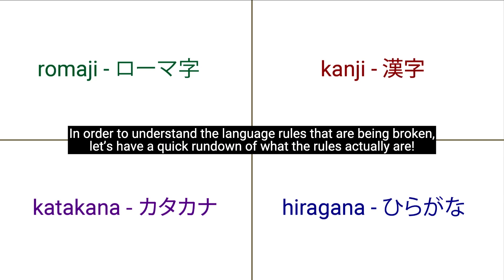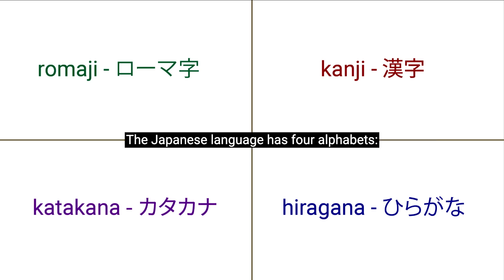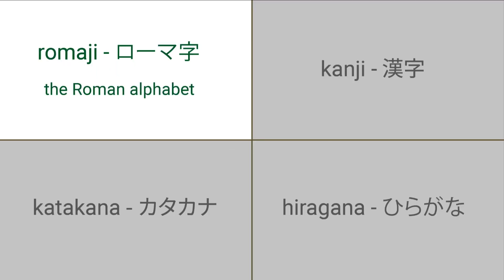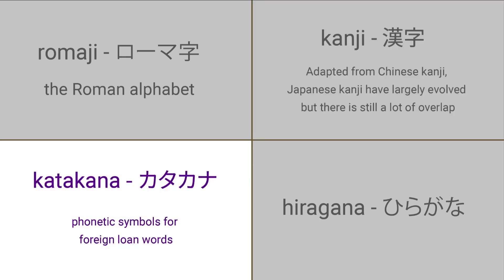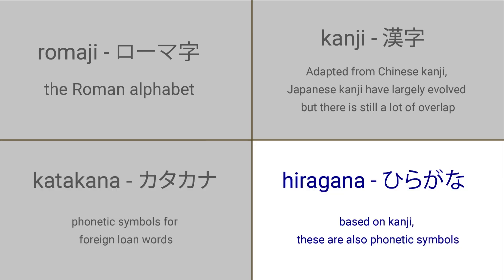In order to understand the language rules that are being broken, let's have a quick rundown of what the rules actually are. The Japanese language has four alphabets: Romaji, the Roman alphabet; Kanji, adapted from Chinese kanji — Japanese kanji have largely evolved but there is still a lot of overlap; Katakana, phonetic symbols for foreign loanwords; and Hiragana, based on kanji, which are also phonetic symbols.